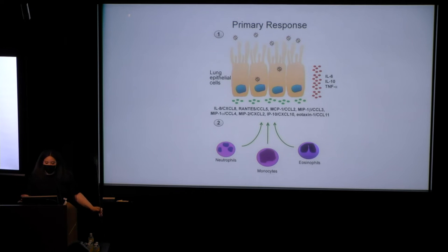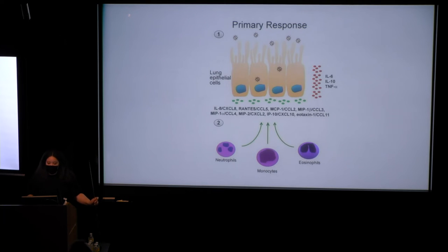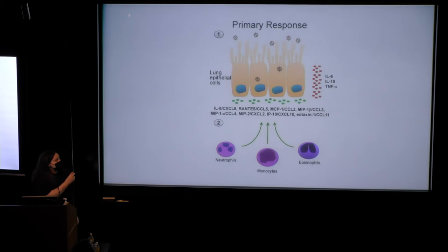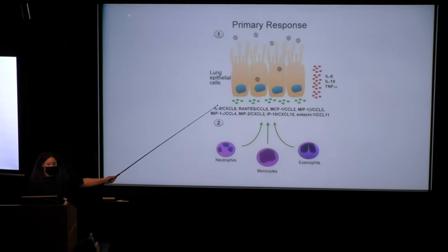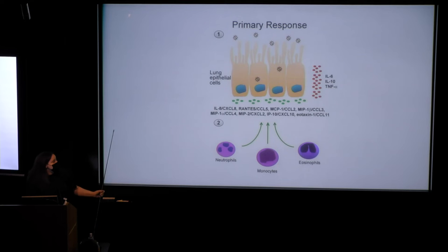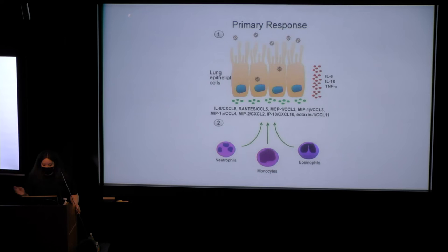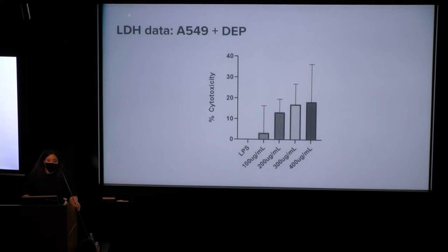Here's another image to put things in perspective. Your lung cells are your primary response — your first line of defense — and they can produce certain cytokines such as IL-6, IL-10, TNF-alpha, and IL-8. This represents general cytokine production when your body is exposed to a pathogen.